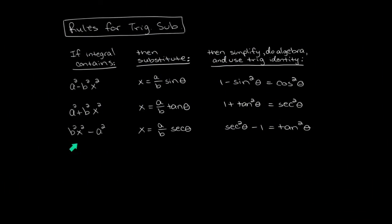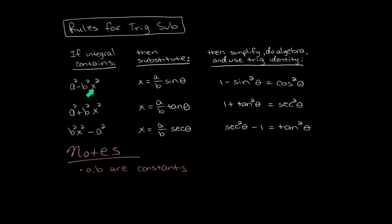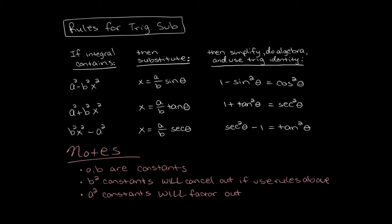Trig substitution is used when one of these quantities appears in your integral and you want to simplify it. Suppose you have a quantity appearing as a squared minus b squared x squared — that's a constant minus another constant times x squared. The rule is that you substitute x equal to a over b sine theta. When you plug that in, x squared becomes a squared over b squared times sine squared, the b squareds cancel, the a squareds factor out, and you're left with the trig identity 1 minus sine squared. The b's always cancel and the a's always factor out.